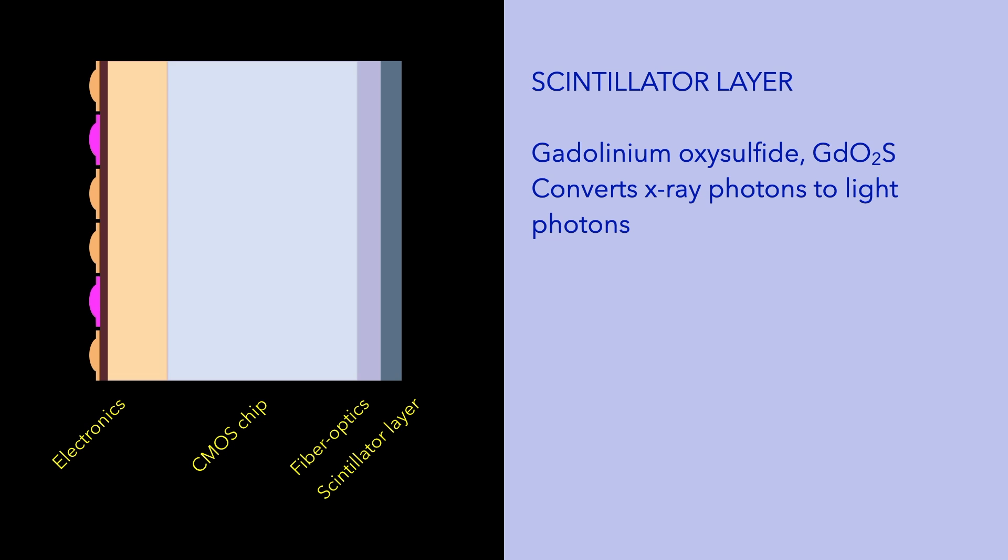Now let's take a look at the functioning of the sensor. When X-ray photons first strike the sensor, they encounter the scintillator layer. The scintillator layer is made up of a high atomic number element such as gadolinium oxysulfide, which very efficiently converts X-ray photons to light photons.